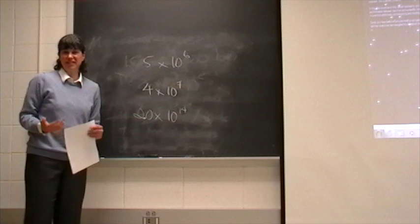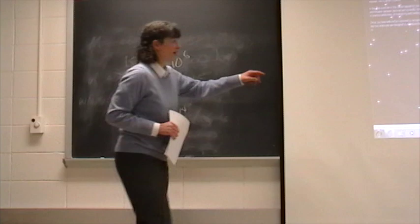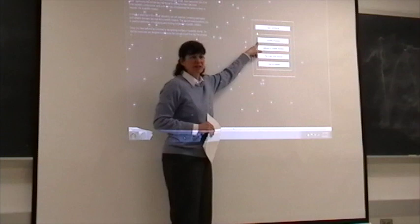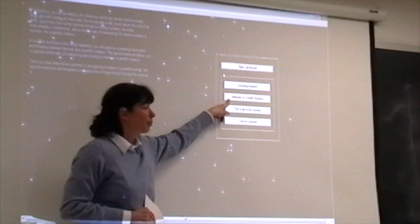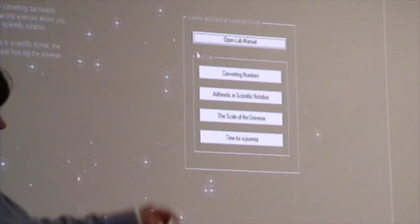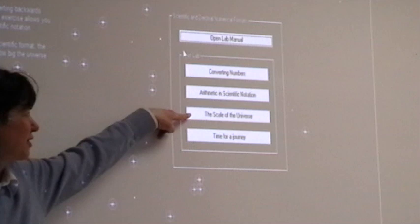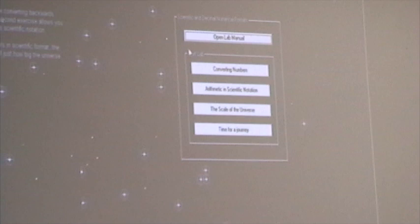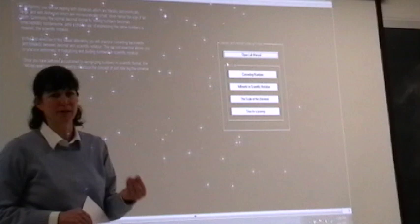So those are the techniques. It will just be a simple review of scientific notation. The first two exercises on this screen are just converting numbers from decimal notation to scientific notation and back again. The second one will be the arithmetic that we just talked about, and then the last two are a little bit of an exercise for you to practice using the skills you've developed for scientific notation to get a sense of the scale of the universe, primarily converting between the units like astronomical units, light years, kilometers, that we would be using to measure astronomical distances.